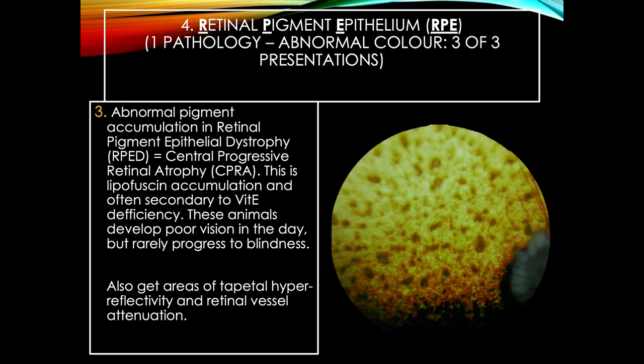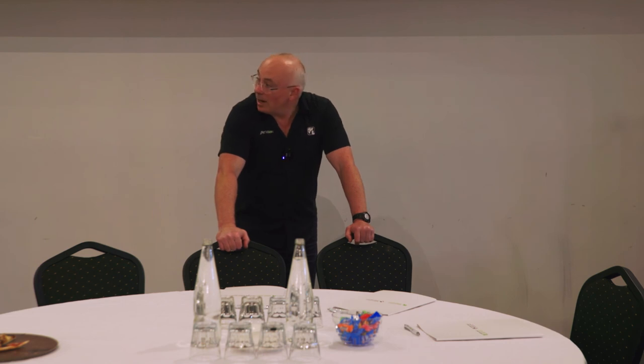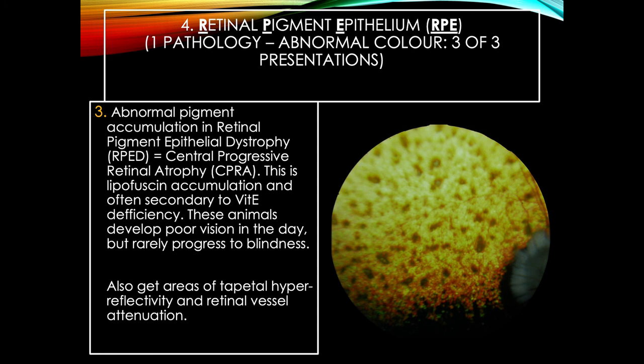The other pathology associated with the RPE is the accumulation of abnormal pigment — lipofuscin. This condition is hardly seen now; it was thought to be a dietary vitamin E deficiency. Central progressive retinal atrophy is what it used to be called — it's now been renamed retinal pigment epithelial dystrophy, RPED. You look at it and go, it's not normal. What do you think of the retinal vessels? Are they easy to see? No — you get retinal vessel attenuation as well. I'd also argue we've got multifocal areas of retinal degeneration.